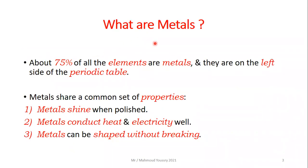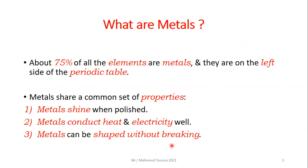About 75% of all elements are metals and they are on the left side of the periodic table. Metals share a common set of properties: number one, metals shine when they are polished; number two, metals conduct heat and electricity; and number three, metals can be shaped without breaking.